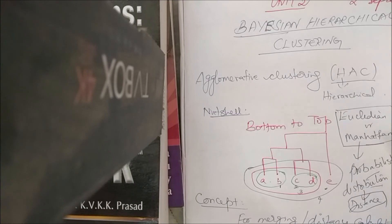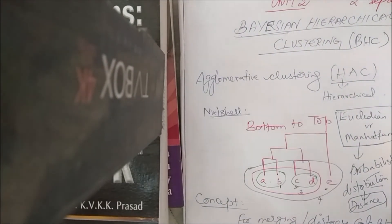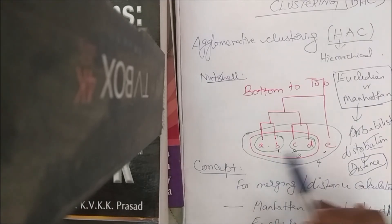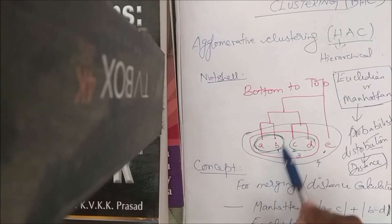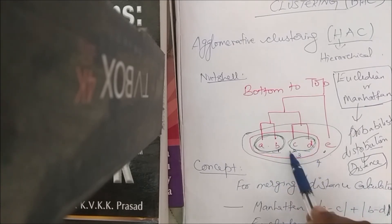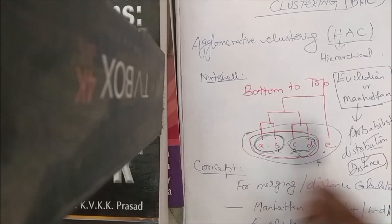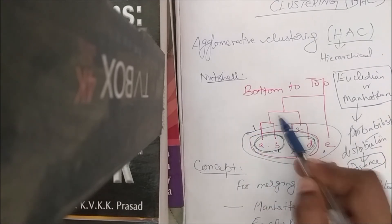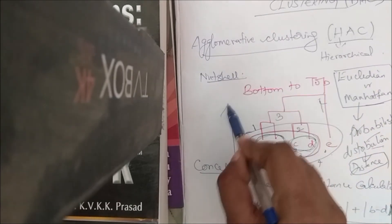To illustrate: consider points A, B, C, D, and E. The closest points are grouped — A and B form one cluster, C and D form a second cluster, giving us cluster 1, cluster 2, cluster 3, and cluster 4. This is your agglomerative, bottom-to-top clustering.